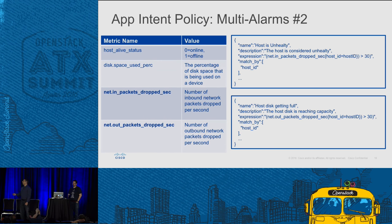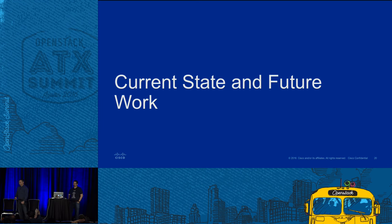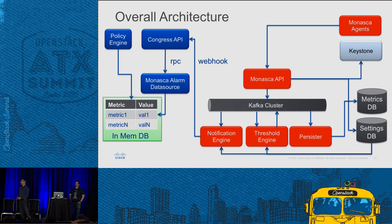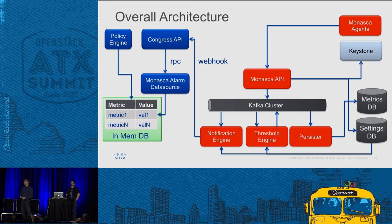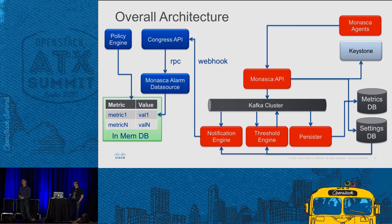The same applies to network-related metrics like packet drops. This is the overall architecture I described: Monasca is available, it supports alarms, and we've identified a fairly simple way to integrate the two using webhooks and RPC. We are going to develop a Monasca alarm data store specialized in receiving and handling alarms for policies. The policy engine will work as it does today — it waits for tables to be filled with values, and it's the responsibility of the Monasca alarm data source to fill those tables when an alarm is received.